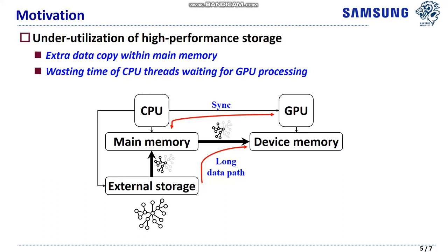Second, a CPU thread waits for the completion of the GPU processing it has requested earlier, wasting its processing time unnecessarily, although there are other tasks waiting for the CPU thread to process.